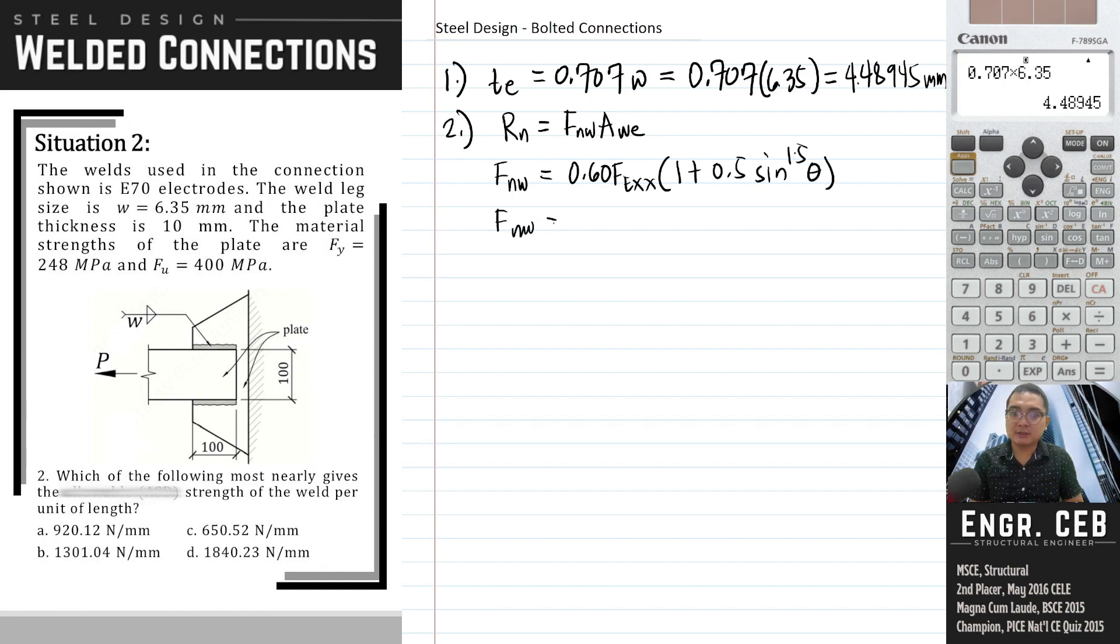Fnw equals 0.6 times fexx times (1 plus 0.5 sine raised to 1.5 of theta). The electrodes is E70, so the stress is 70 ksi. Converting to megapascals: 1 ksi is 6.9 megapascals, therefore this is equal to 483 megapascals.